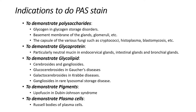To demonstrate glycolipids, for example, cerebrocytes and gangliocytes — glucocerebrocytes in Gaucher disease, galactocerebrocytes in Krabbe disease, gangliocytes in lysosomal storage disorder; to demonstrate lipofuscin in the Dubin-Johnson syndrome; and to demonstrate Russell bodies of plasma cells.